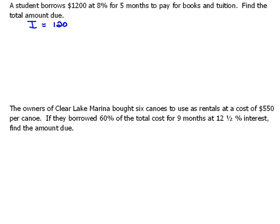That would be the principal of $1,200 times the interest rate, which in this case would be .08, times the time in years. Since we're dealing with 5 months, that'll be 5/12 of a year. We'll put that into our calculator and figure out what that is — and that should be $40. So the interest they're going to pay is $40.